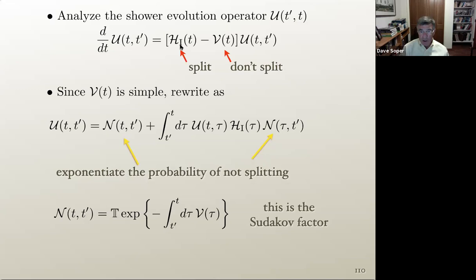In terms of operators: U(T, T') is the operator that generates shower evolution from initial time T' to later time T (later means softer). U is an operator on a statistical space — a space of probability functions, but with quantum amplitudes for color and spin. The derivative of U with respect to T gives the evolution equation: dU/dT = U times (H minus V). In our notation, H represents the splitting probability (like an interaction Hamiltonian in quantum mechanics analogy), and V represents the no-split probability (like a free Hamiltonian). V is the integral of H, and these contain integrals over momentum fraction z and complicated color operators.